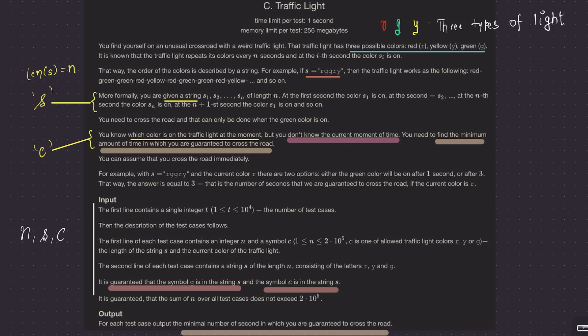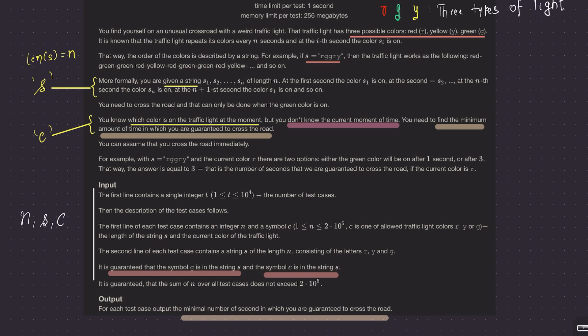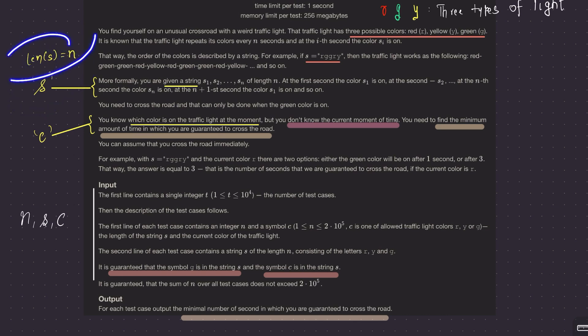Welcome back everyone. Let's solve the traffic light question. This is an implementation-based question. We are given a traffic light which takes on three colors: red, green, and yellow. At the i-th second, the color s[i] is on. So if the string is 'rggry', at the first second red is on, second green, third green, fourth red, fifth yellow. This traffic light repeats its colors every n seconds — it is cyclic.